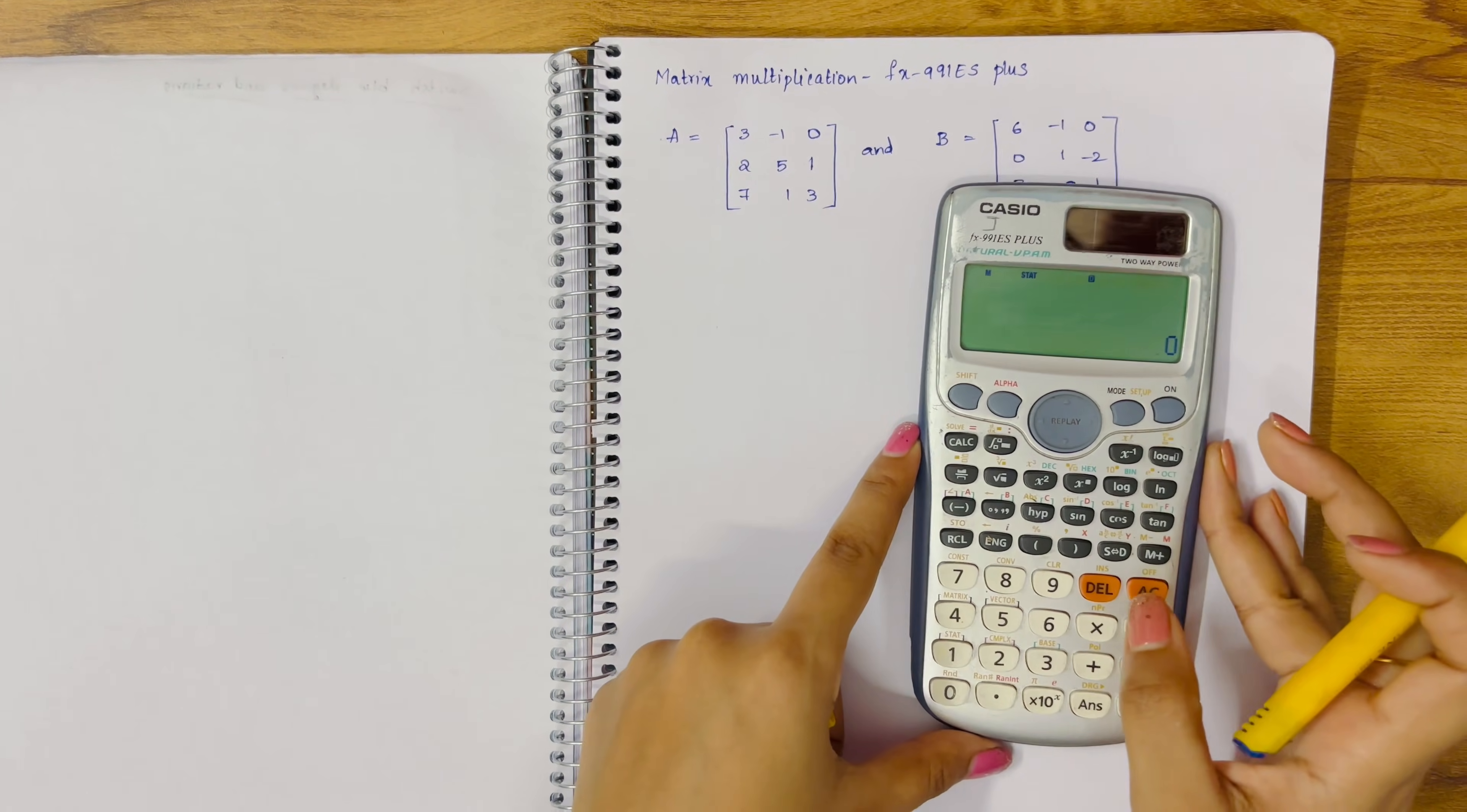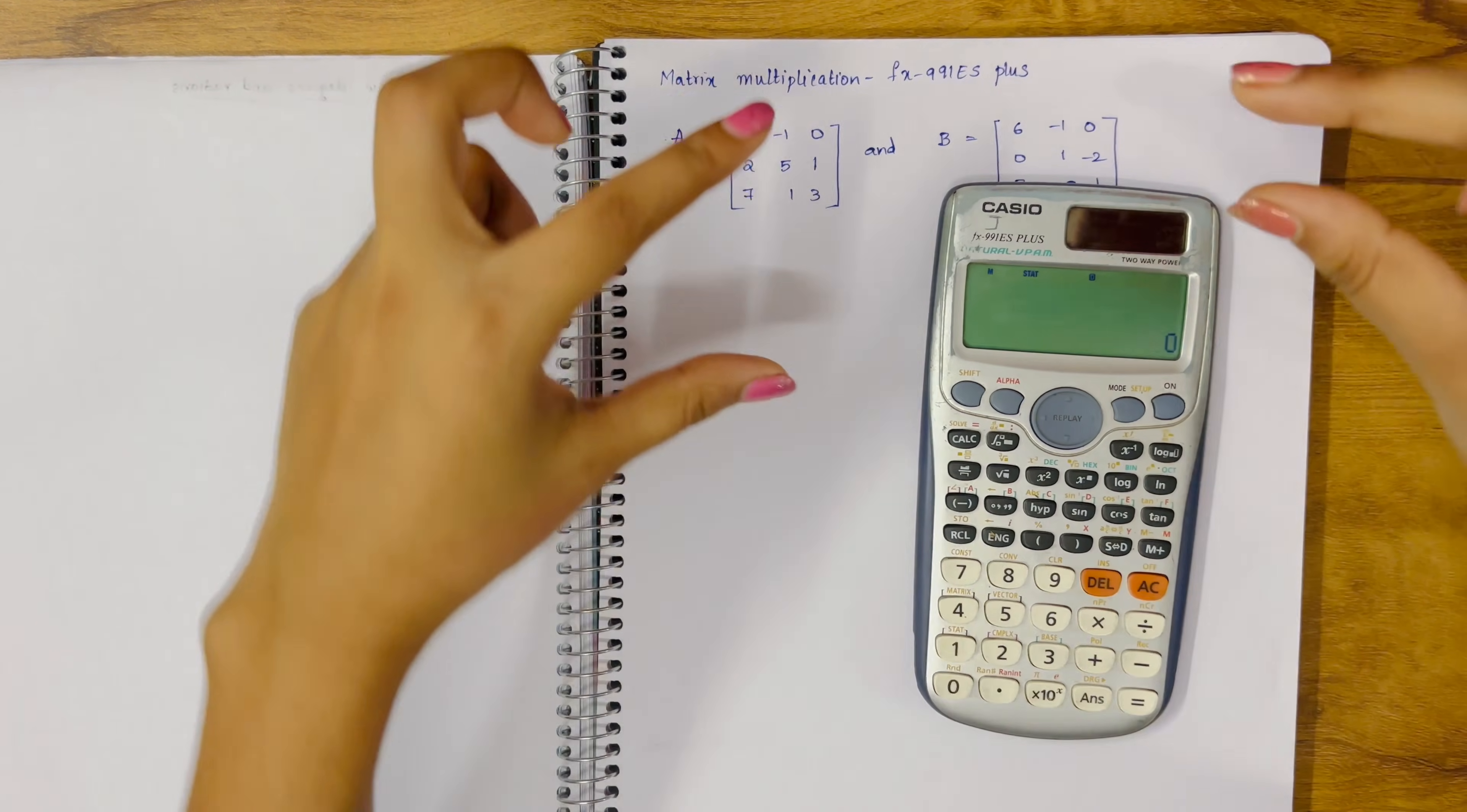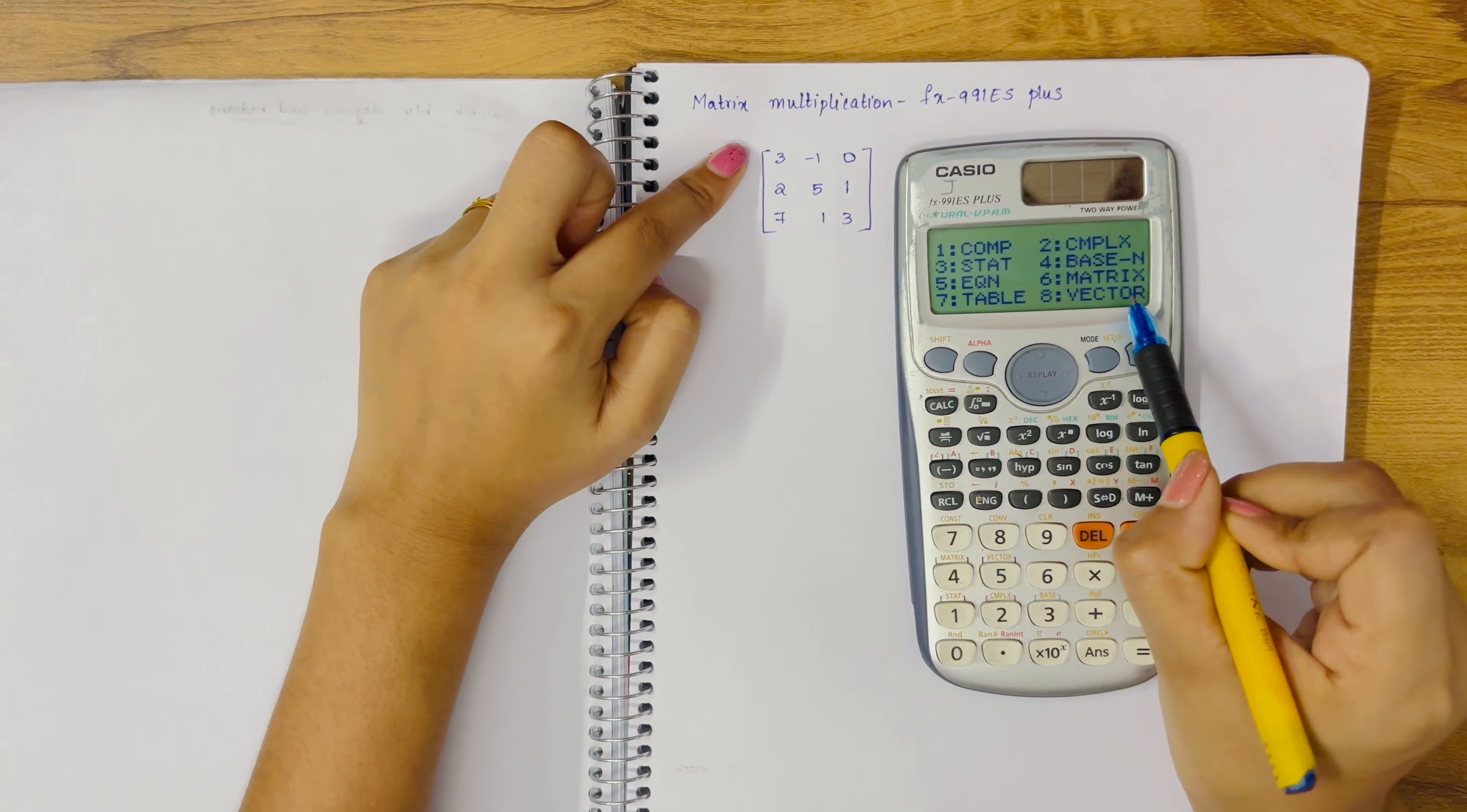Let's start. In the previous video I used another calculator, but this is also pretty simple. First, we need to store these two values. Start by pressing mode setup and click on matrix since we are doing matrix calculation.